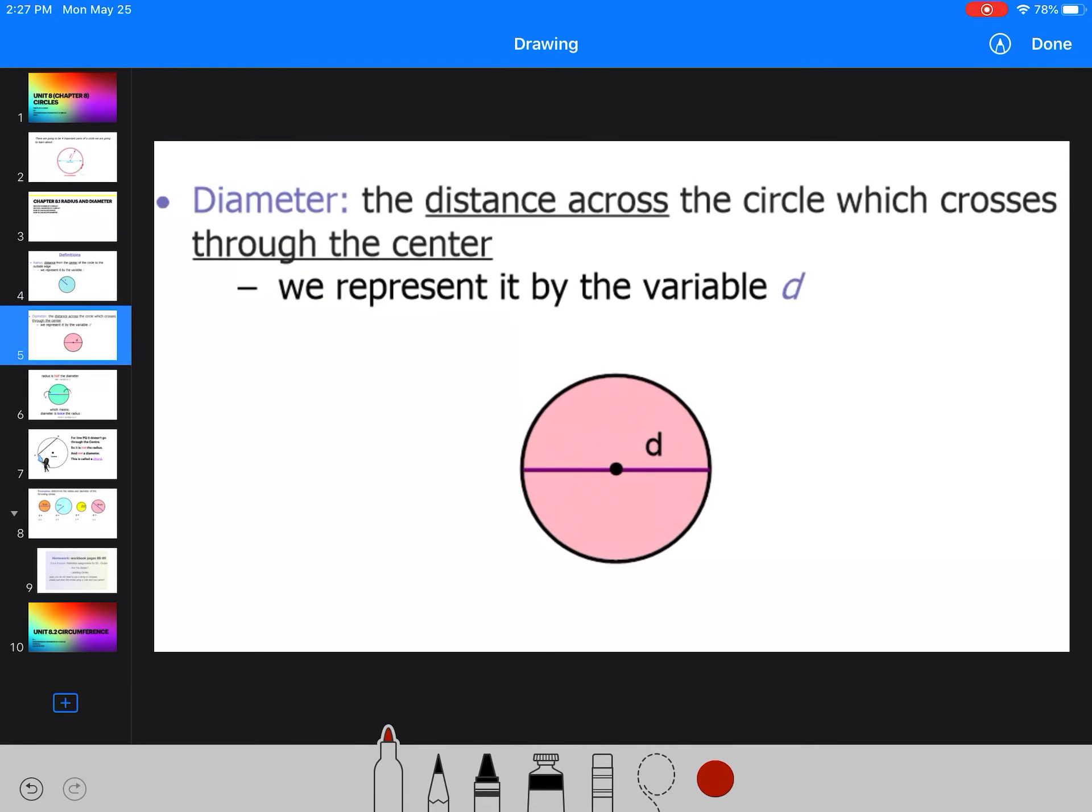Next, the diameter. So that's the distance across the circle, which crosses through, it goes through that center. Remember, that little dot right there, that is your center. And we represent that with a lowercase d. Make sure that is also written down.